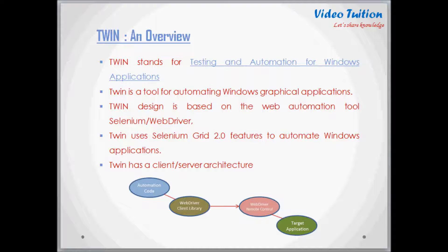TWIN stands for Testing and Automation for Windows Applications. TWIN is a tool for automating Windows graphical applications. It enables you to write code to click buttons, enter text, and view the results. TWIN's design is based on the web automation tool Selenium WebDriver.